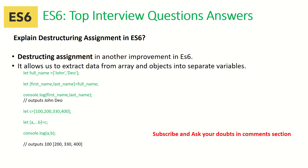The next question is: explain destructuring assignment in ES6. Destructuring is a feature of ES6 that allows us to extract data from arrays and objects into separate variables. For example, given a variable fullName equal to 'John Doe', we can extract: let [firstName, lastName] = fullName. When we output firstName and lastName, we get the values separately. You can use it to assign to new variables or to split arrays — those are the two important implementations of destructuring.